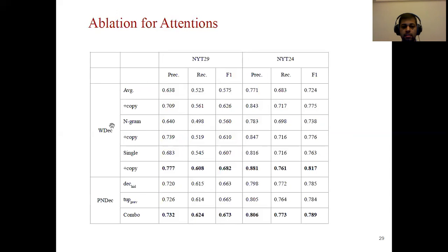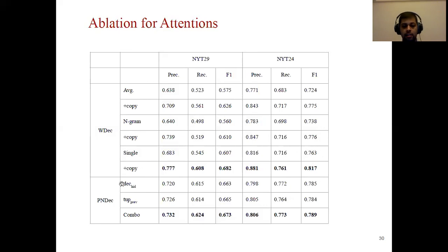These are the ablation results. For word-level decoding we test three types of attention and on top of that apply the copy mechanism. We see that single attention with copy mechanism achieves the best performance. Comparing each attention type with and without copy mechanism, we can see that copy mechanism improves performance by five to seven percent for every attention type. For pointer network-based decoding, the combination attention achieves the best performance, although the differences may not be very significant.